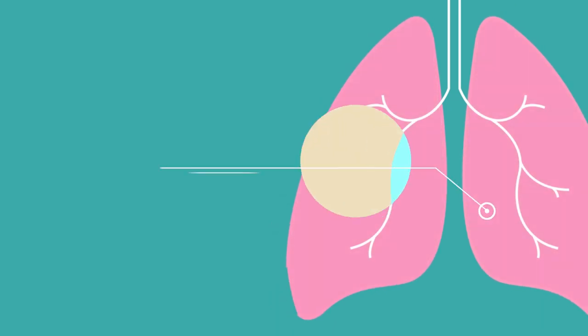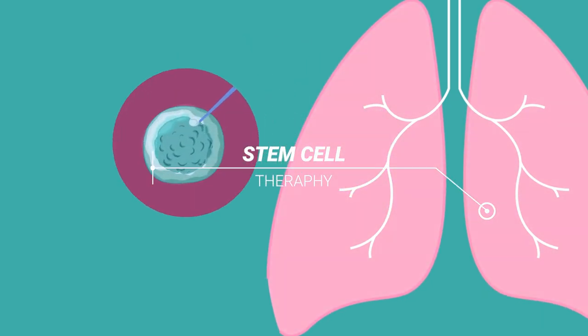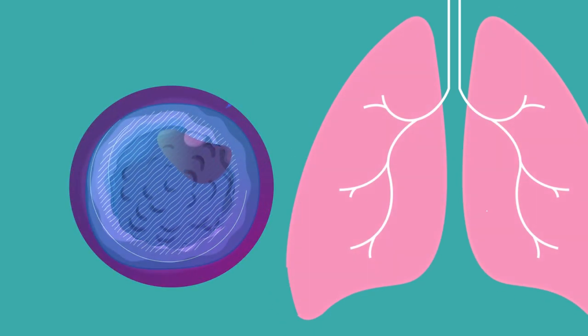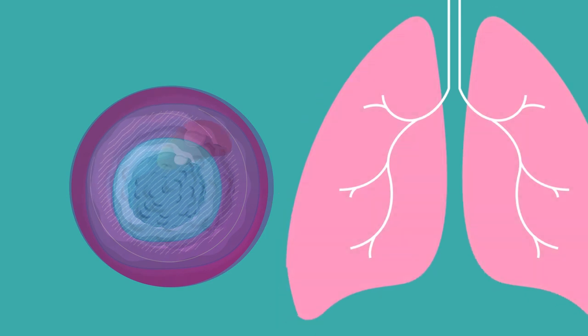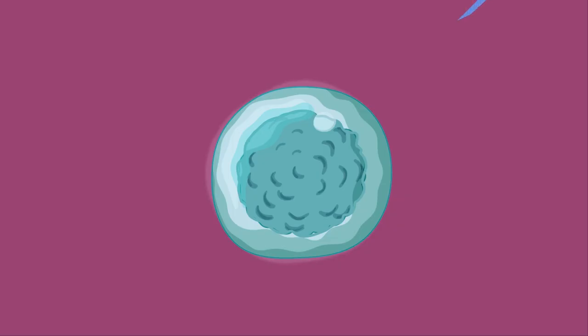You may have also heard about stem cell therapy where researchers create IPS cells from CF patient cells. Then, they use gene editing to correct the CFTR mutations in these cells. The goal is to re-implant the edited cells into the lungs of the patient to produce healthy lung cells with a corrected CFTR mutation.